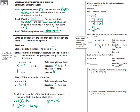Now find the y-intercept using slope -1 and the point (2, -3). Substituting: -3 = (-1)(2) + b, so -3 = -2 + b. Add 2 to both sides and b = -1. So substituting -1 for m and -1 for b: y = -x - 1.